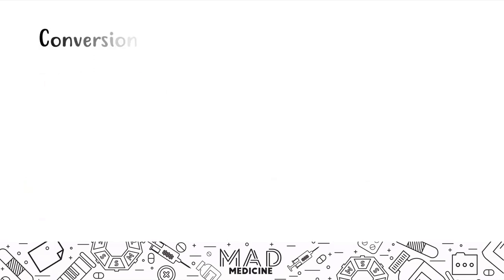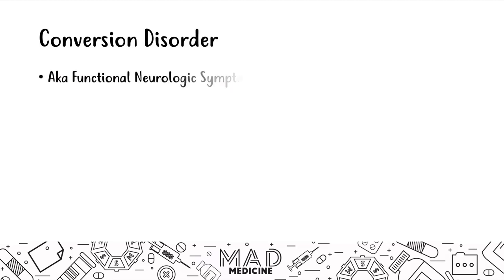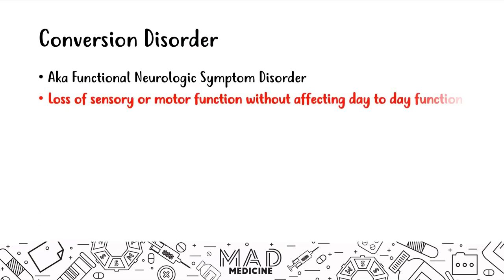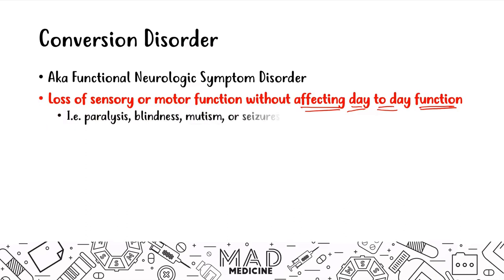The last disorder we're going to talk about today is conversion disorder, also known as functional neurologic symptom disorder. In this disorder, a patient will suffer loss of sensory or motor function. This sensory or motor function loss could be paralysis, blindness, mutism, or seizures, and it often follows an acute stressor — it could be work-related, family-related, a physical event, or abuse. After this acute stressor, they end up losing sensory or motor function.